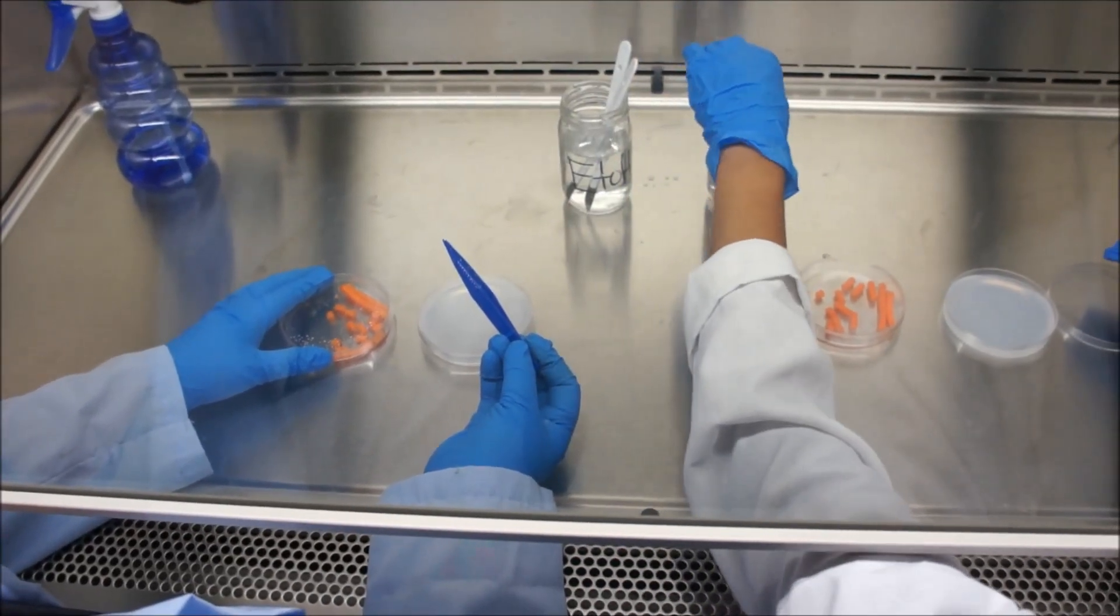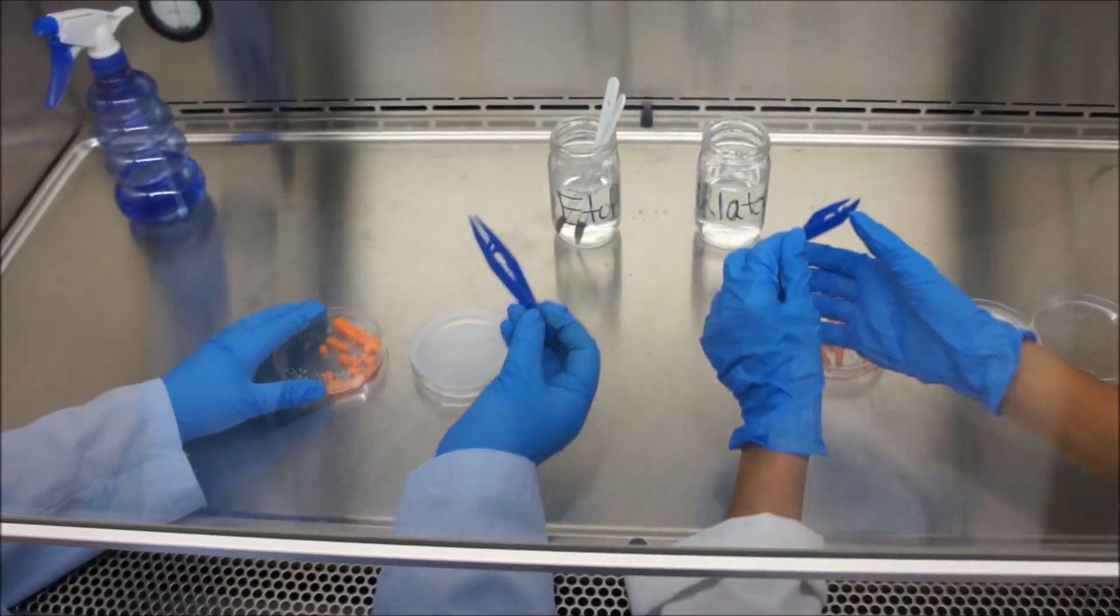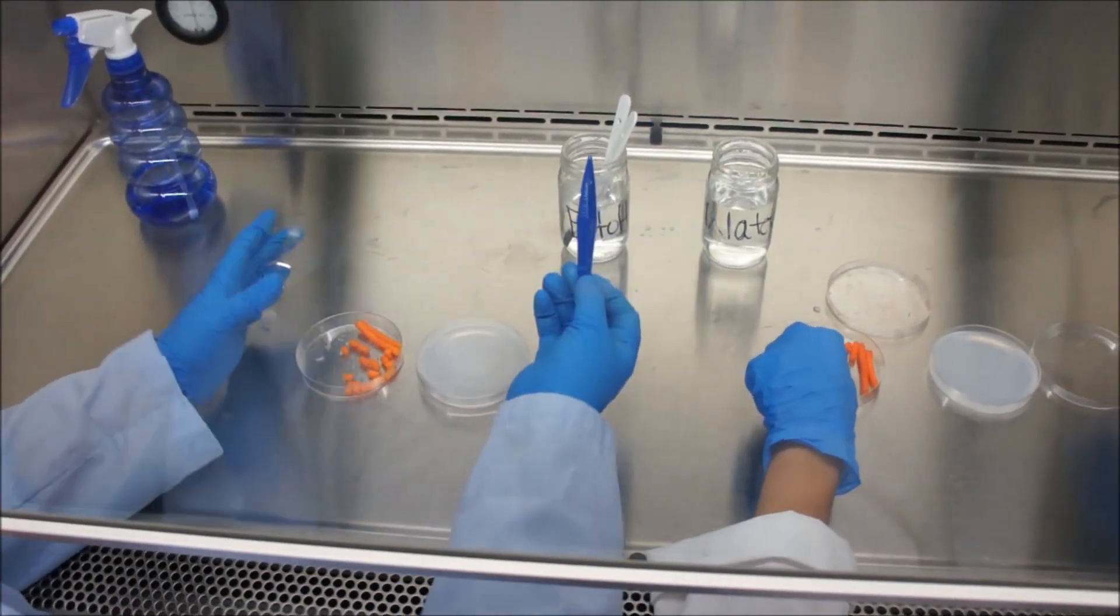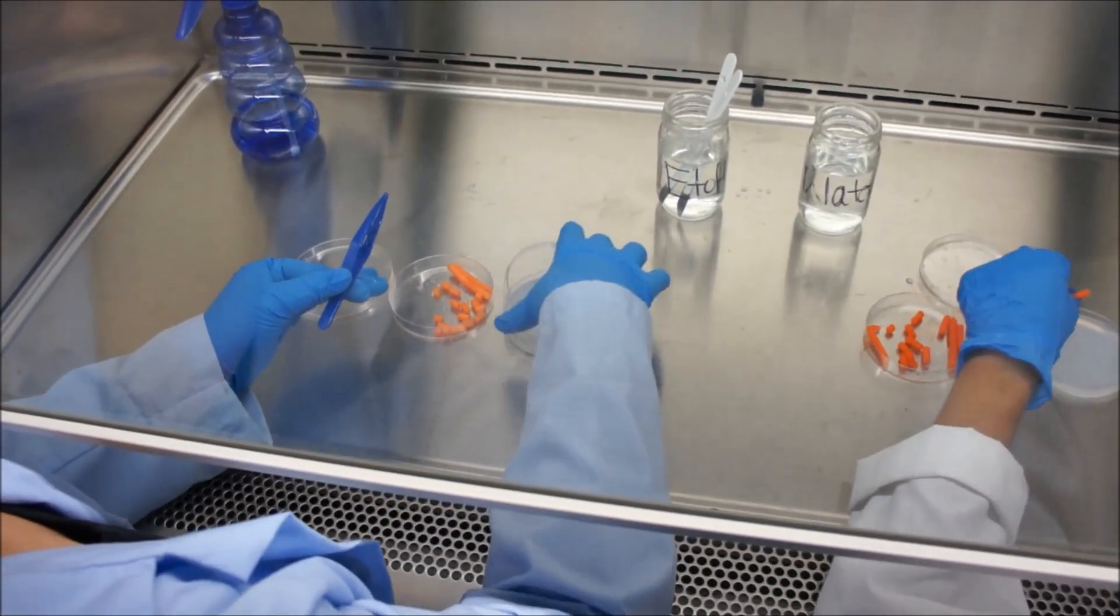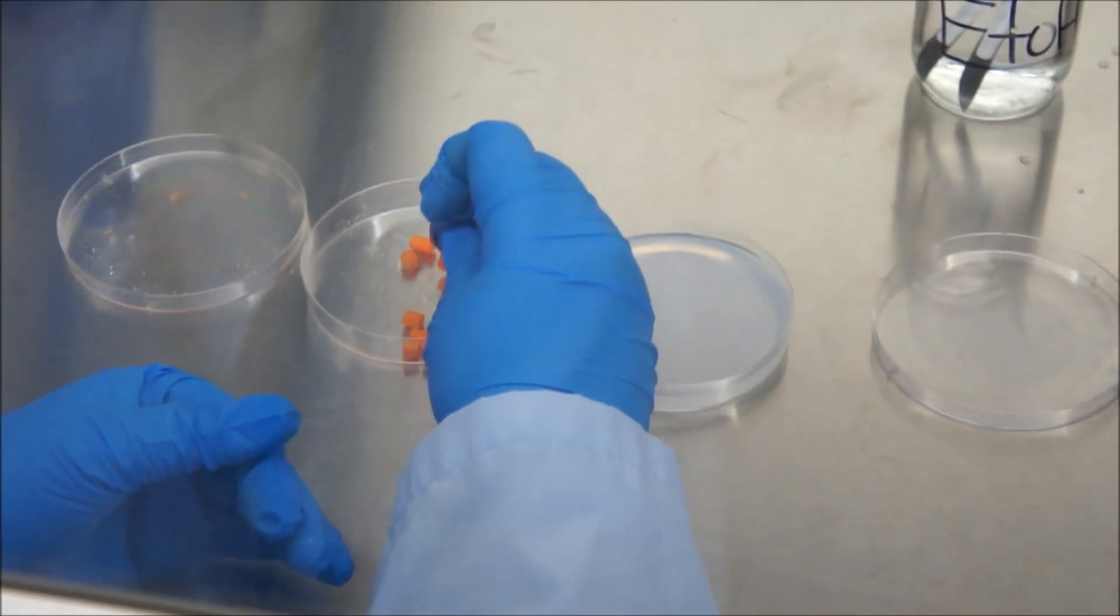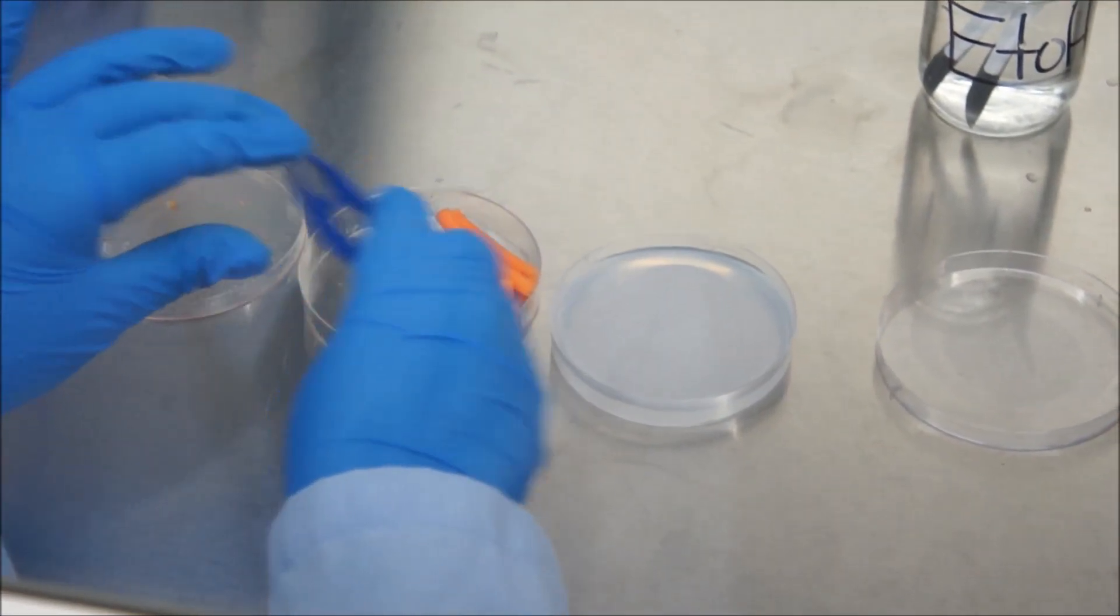Remove forceps from ethanol and shake into the tube with sterile water. Take a dish of callus initiation medium and carefully lift the lid. Using the forceps, lay the cross sections of the carrot core or carrot cylinders on the agar.